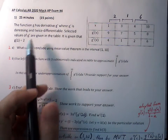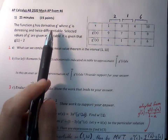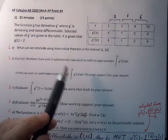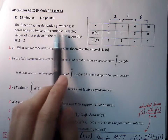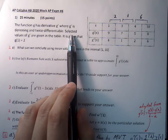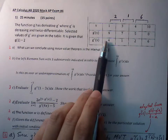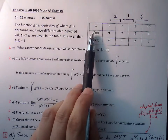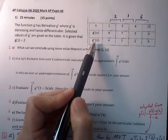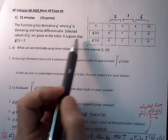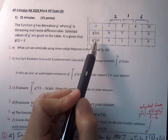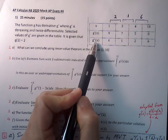This is the 2020 mock AP exam number four. We have a table of values where we're given values at certain intervals for G prime as well as for G double prime.